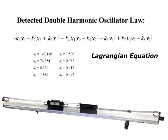The law found for the air track in this search was the Lagrangian equation, which relates to the system's kinetic and potential energy.